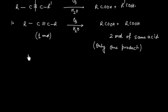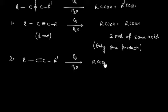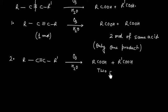Now, if I have an unsymmetrical alkyne and if we do ozonolysis, we will have two different acids. So this time we are getting two different acids.